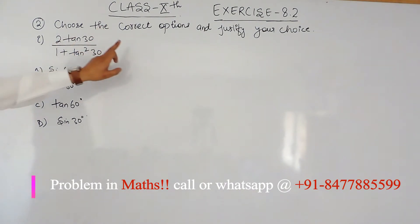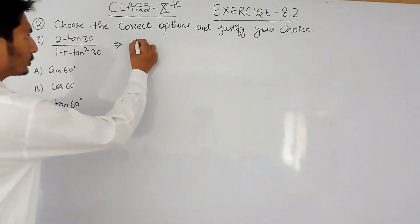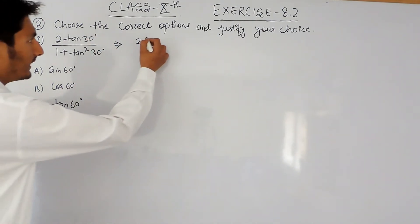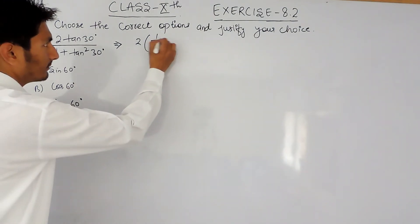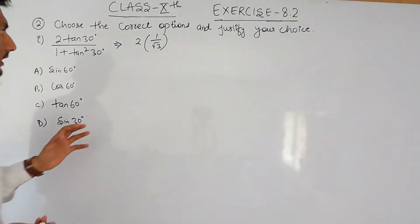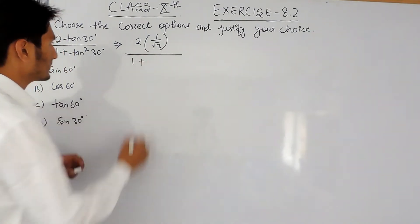Now let's substitute the value and see what the answer will be after solving this expression. It is 2tan30°, and we know that the value of tan30° is 1/√3. For solving, it is 1 plus tan30° squared, so it will be 1/(√3)².